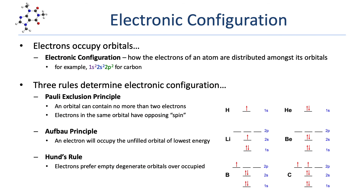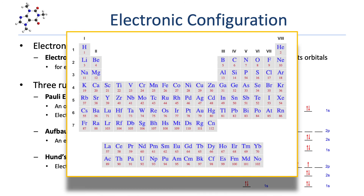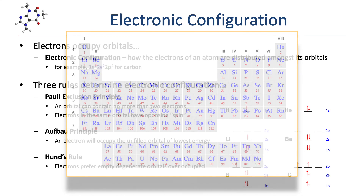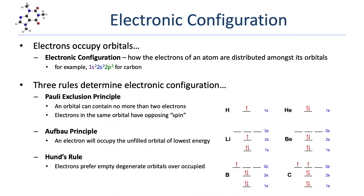The first row of the periodic table has two elements, hydrogen and helium, representing the first shell with only one orbital — the 1S orbital. For hydrogen, with an atomic number of 1 and one proton, the neutral atom has one electron to balance the charge. We simply place that one electron into the 1S orbital. For helium, with two protons, the neutral atom has two electrons. We place both into the 1S orbital, and since we're putting two electrons in the same orbital, we give them opposing spin — represented by arrows pointing in opposite directions.